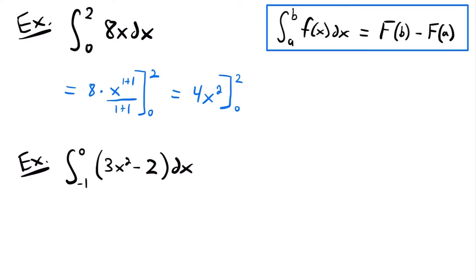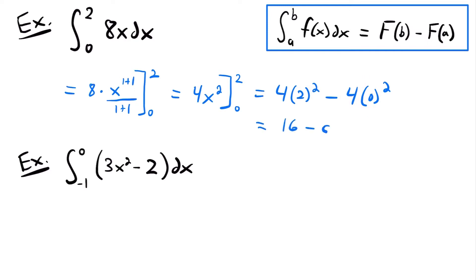Using the fundamental theorem of calculus, this will be equal to the antiderivative evaluated at 2 minus the evaluation at 0. So we're going to have 4 times 2 squared minus 4 times 0 squared. 2 squared is 4, so we'll have 4 times 4, which is 16. Then minus 4 times 0 squared — 0 squared is 0, so 0 times 4 is 0. So this will be equal to 16 minus 0, which is just 16.